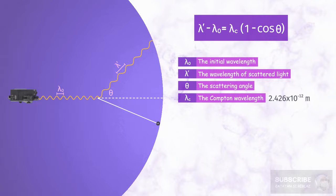Lambda c is equal to 2.426 times 10 to the power of minus 12 meter, or 0.02426 nanometer.